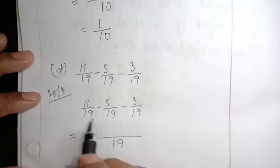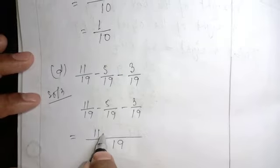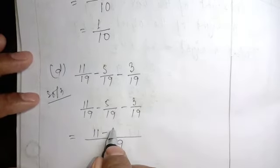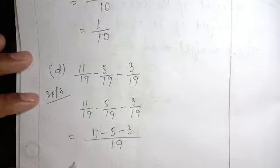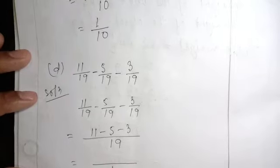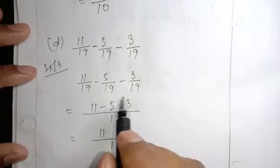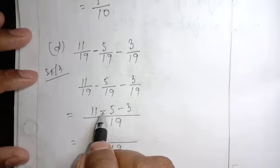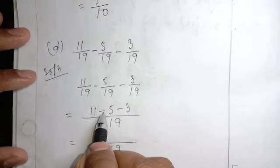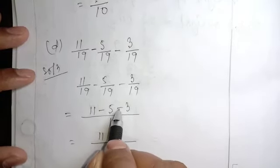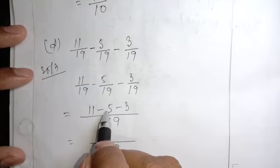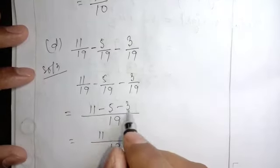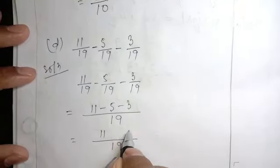All their denominators are same, then you just take common, 19. Then subtract their numerators. 19, 11, here, minus and minus, same symbol. If they have the same symbol, it will be added. 5 plus 3 is 8.